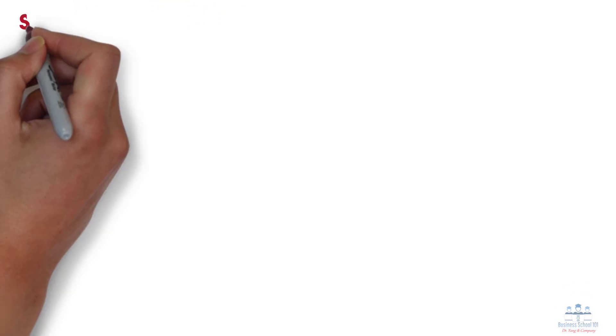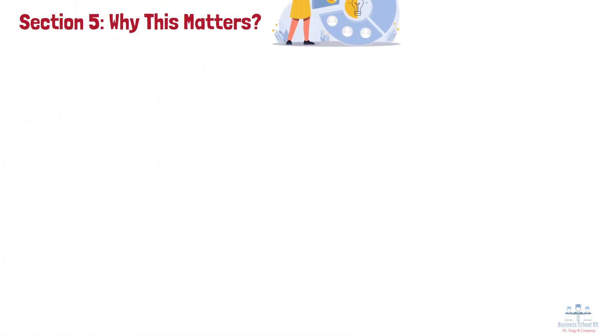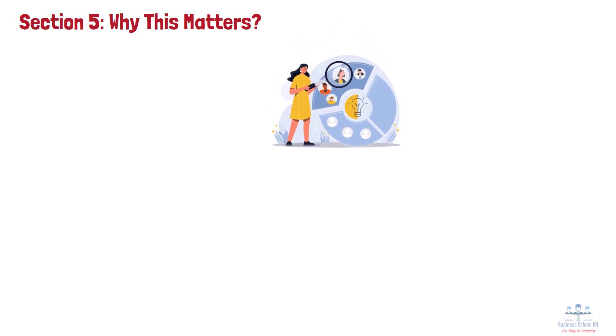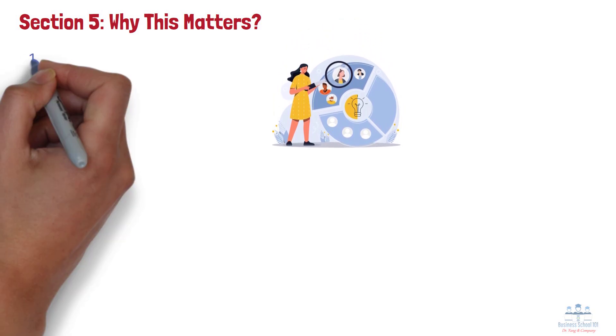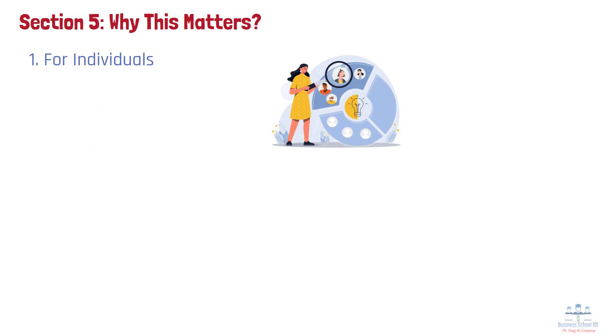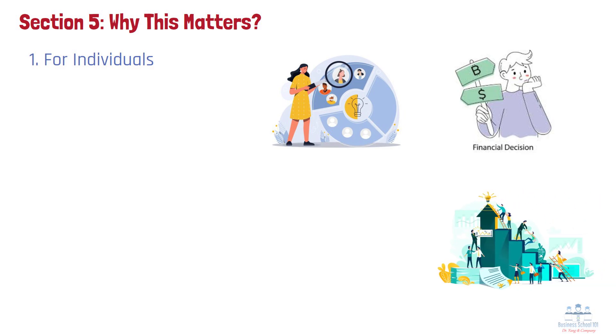Section 5: Why This Matters. Let's take a closer look at how business cycles matter for individuals, businesses, and policymakers. Number 1: For Individuals. Understanding business cycles is crucial for individuals; recognizing where the economy stands in the cycle can help with personal financial decisions. For example, during an expansion, job opportunities might increase and wages may rise, making it a good time to advance careers or make significant investments. On the other hand, during a recession, it's important to prepare for potential challenges like job losses or tighter credit conditions.